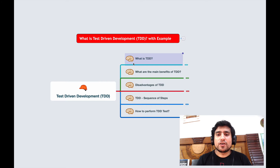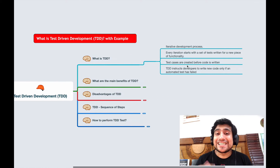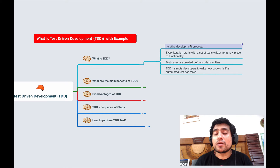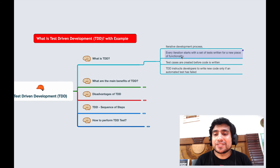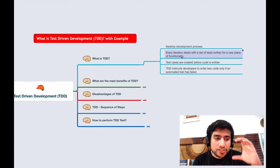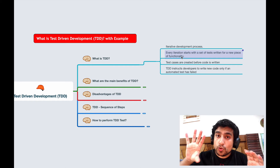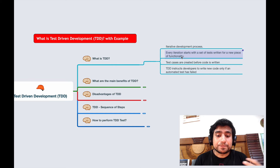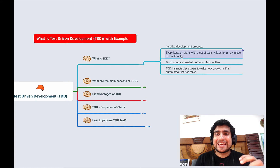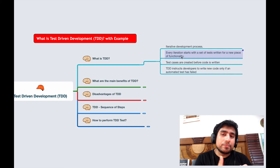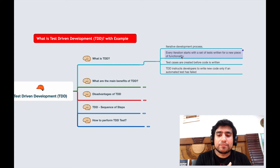TDD is basically an iterative development process. In TDD, every iteration starts with a set of tests written for a new piece of functionality. In simpler terms, you first prepare a series of test cases — not the functionality itself. For example, you have a username that you want to validate: it should not contain spaces, should not contain special characters, and should only contain letters like A, B, C, D.